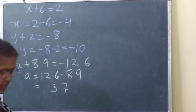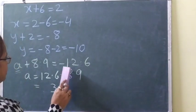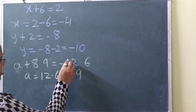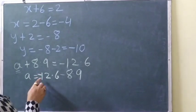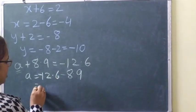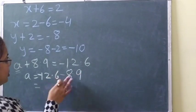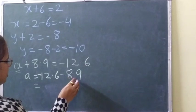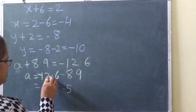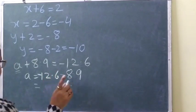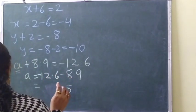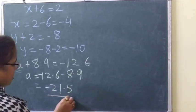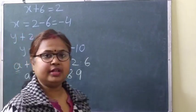One mistake is here — you also must have noticed it. Here the minus sign was not copied — this is the mistake that we generally make. So here also minus sign is present. Then the answer: 9 and 6 we will add, giving 15. So the answer will be minus 21.5.